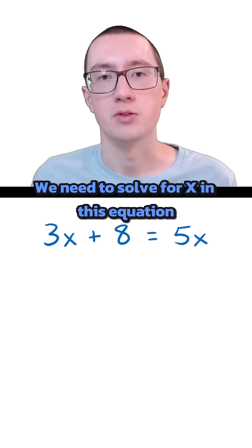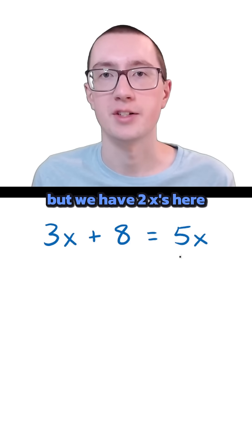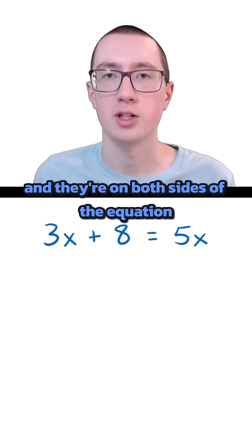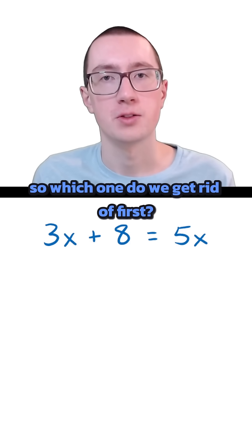We need to solve for x in this equation, but we have two x's here, and they're on both sides of the equation. So which one do we get rid of first?